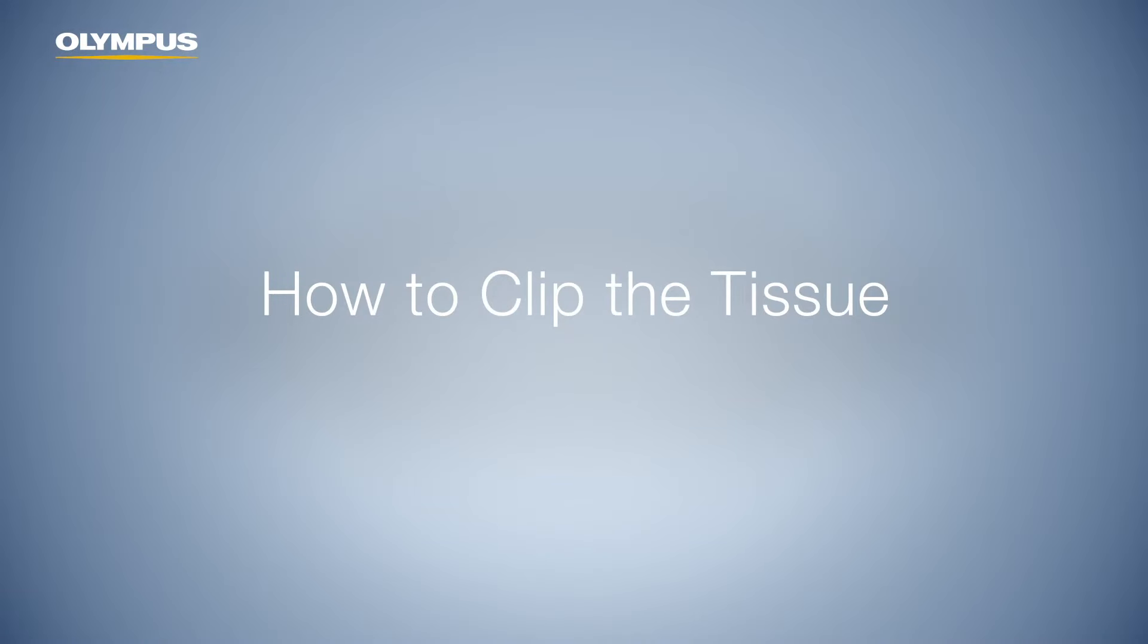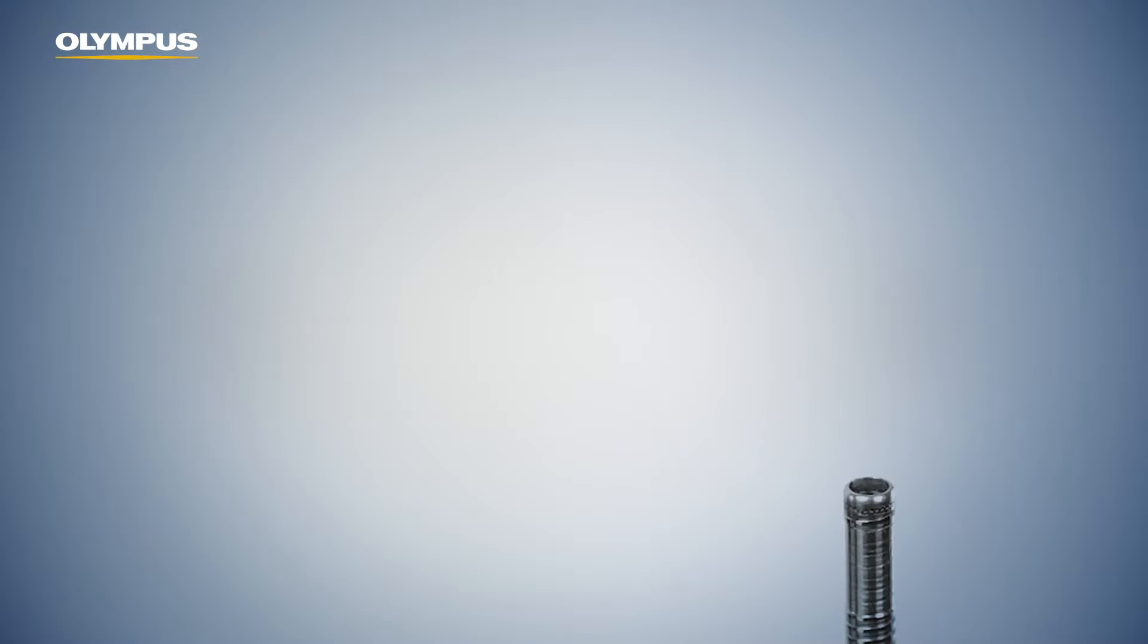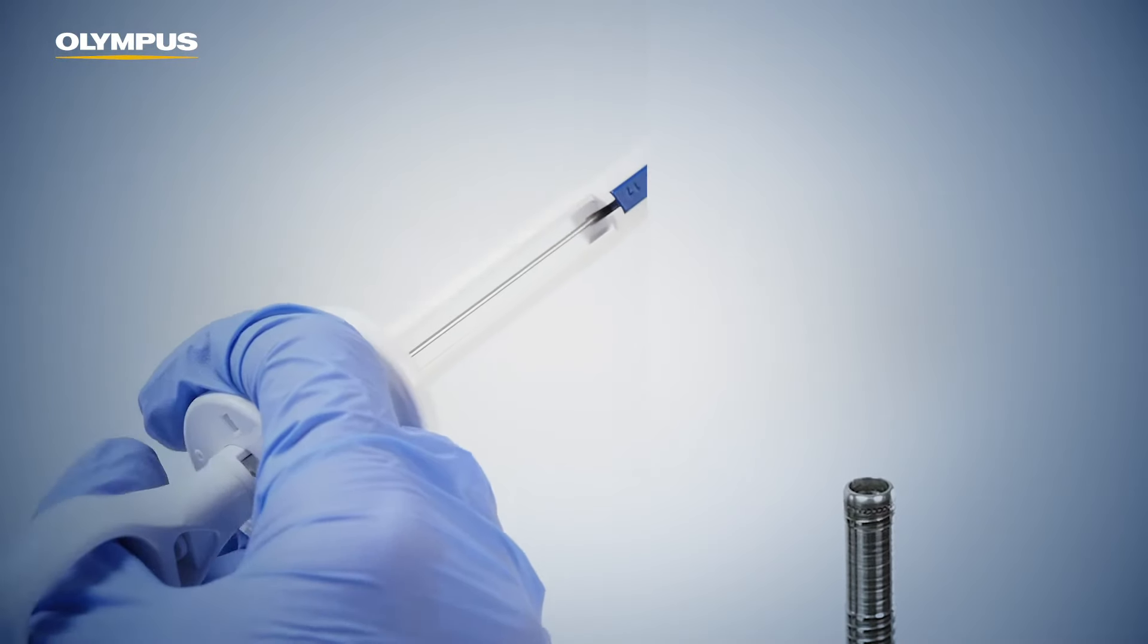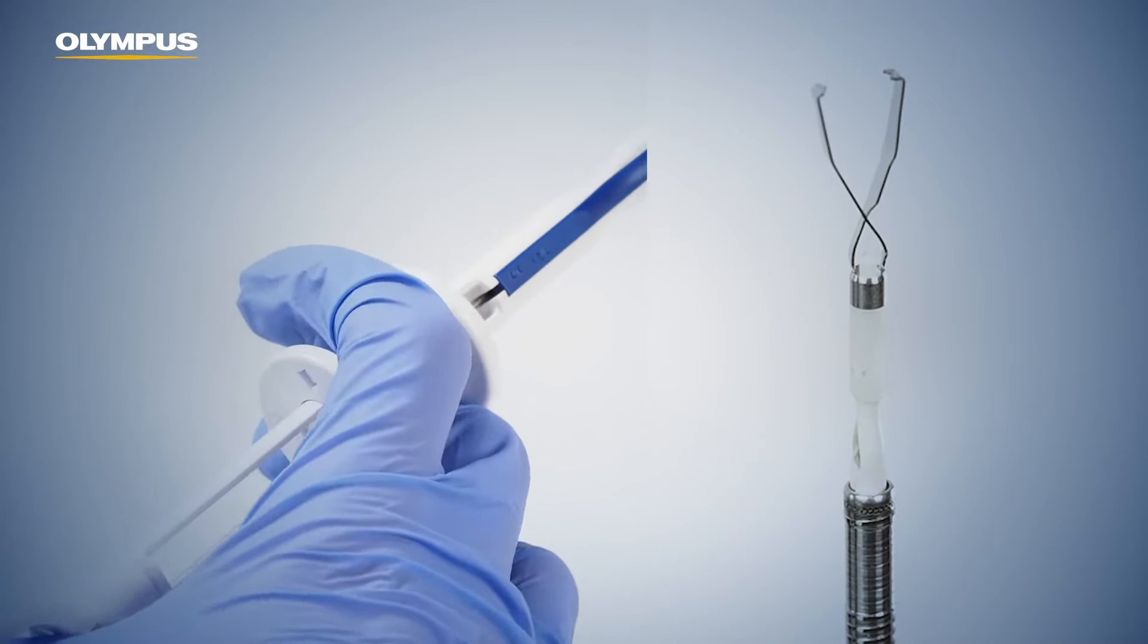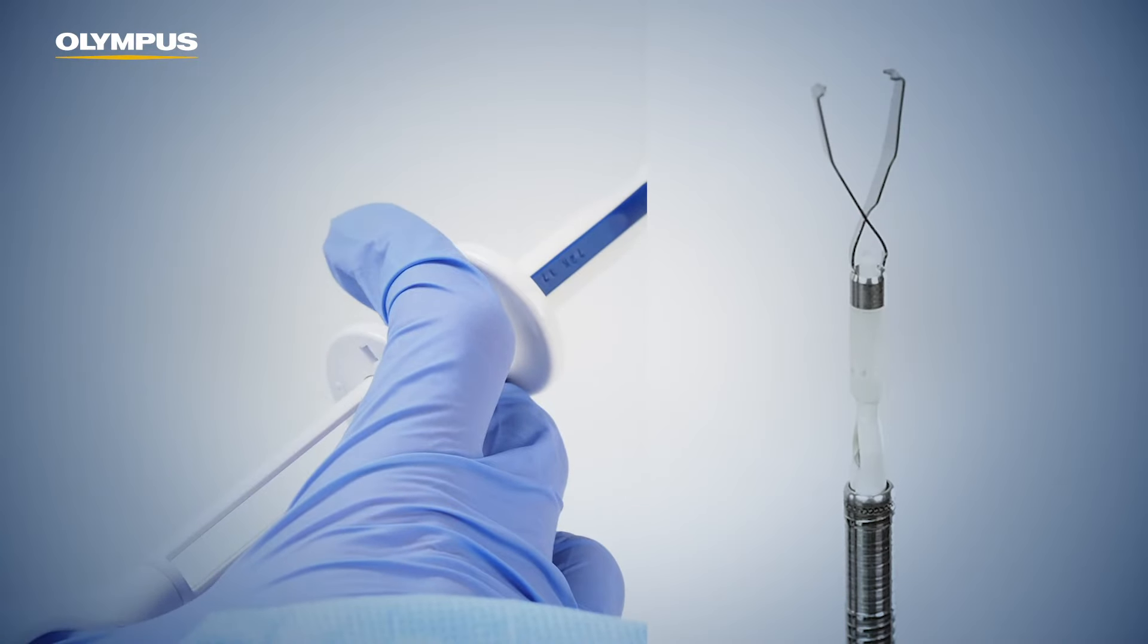How to clip the tissue. After inserting the instrument into the endoscope, gently push the slider so that the clip projects from the coil sheath until the white part of the clip is visible.